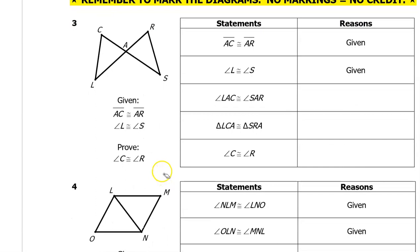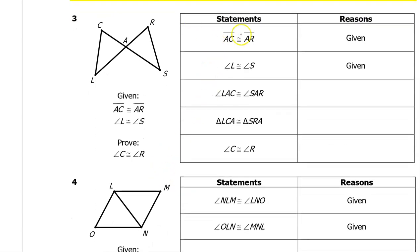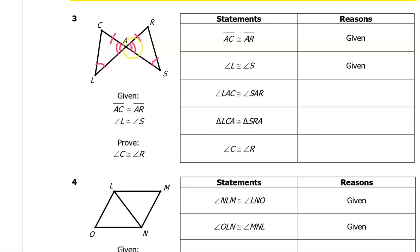Let's take it from the beginning. For problem number three, we are given that segment AC is congruent to segment AR. Let's mark that. In addition, we are given that angle L is congruent to angle S. So here's angle L, and here's angle S. We are told that angle LAC is congruent to angle SAR. That is not given — these are vertical angles, so the reason is vertical angles are congruent.